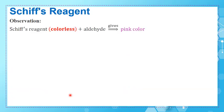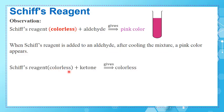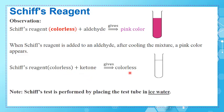After Fehling's solution, we have Schiff's reagent. Schiff's reagent is colorless; when added to an aldehyde, a pink color is obtained after cooling the mixture. When Schiff's reagent is added to a ketone, the color stays colorless. Note that Schiff's test is performed by placing the test tube in ice water — you must also mention this when asked to describe this test.